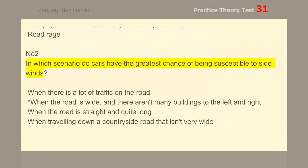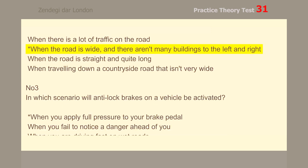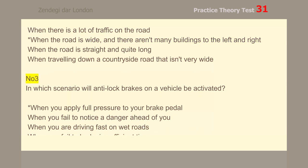Number 2. In which scenario do cars have the greatest chance of being susceptible to side winds? When the road is wide and there aren't many buildings to the left and right.